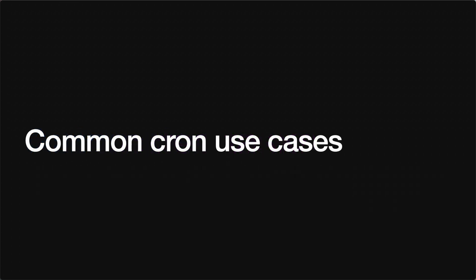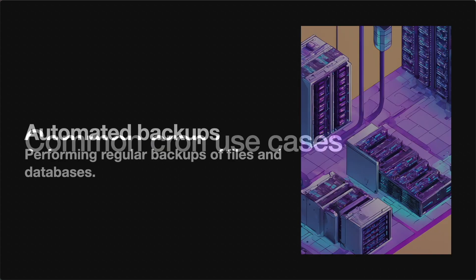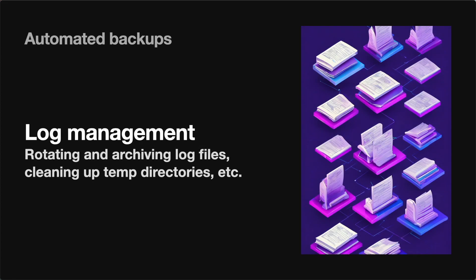Let's dive into some common use cases for cron jobs. We're going to start with automated backups, which is one of the most common use cases of cron. You can use cron jobs and cron scripts to automate the backups of files and databases. Next up is log management. In software development, we typically generate lots of logs because they either need to be piped to a data warehouse for analytics or used for debugging purposes. This data builds up on machines over time, and cron jobs can be scheduled to automatically clean up logs stored locally on machines.